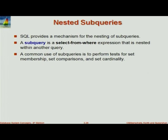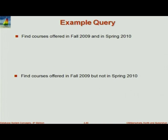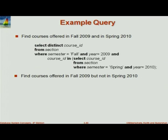Now, nested subqueries, which had already been mentioned. A very simple query: find courses offered in fall 2009 and spring 2010. There are many ways of writing this query; this is just an example. Select distinct course ID from section where semester is fall and year 2009, and that course ID is also present in select course ID from section where semester is spring and year is 2010. So, this is an intersection.